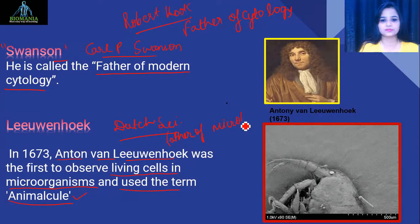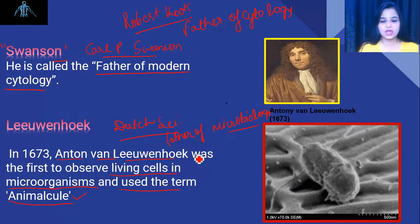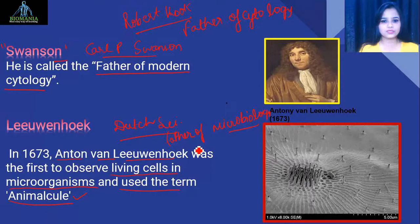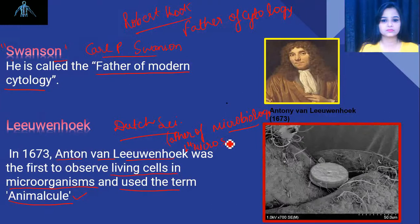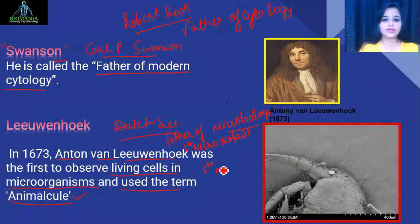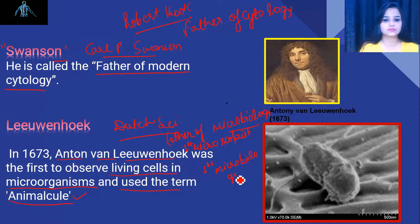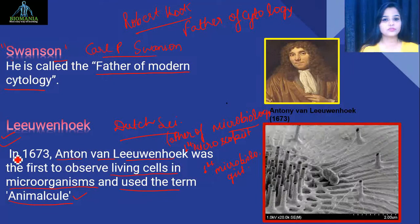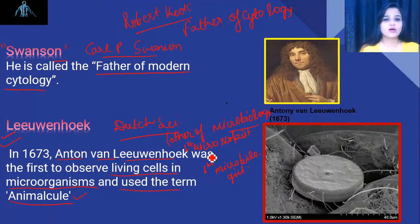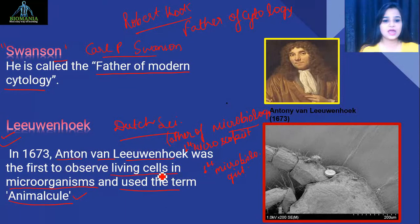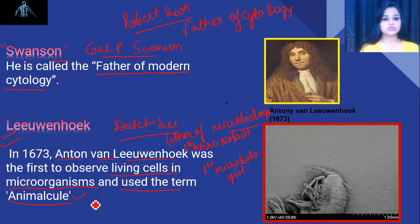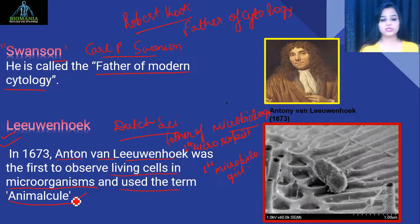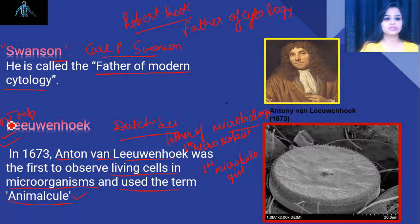Anton van Leeuwenhoek was a Dutch scientist and is also known as the Father of Microbiology. He is generally considered the first microscopist. He is very important from the exam point of view — remember he was the first to observe living cells in microorganisms and coined the term animalcules. He is the most important scientist in this section.